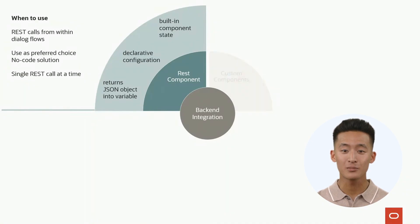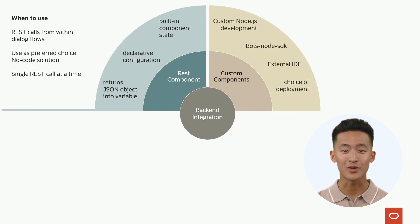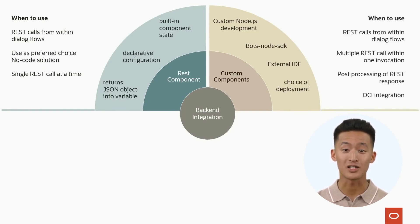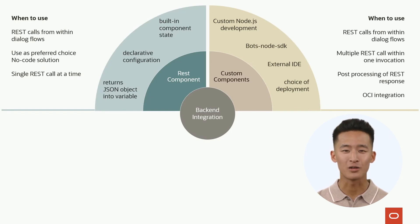Then we have the custom component, which is something that you develop using Node.js, and for which there is an SDK provided. You develop it in an external IDE, and then you have a choice of deployment, from an embedded deployment in ODA to an external deployment with OCI functions or Kubernetes. You would use this type of integration if a REST call requires post-processing on the response, or a follow-up REST call, or needs an OCI integration.